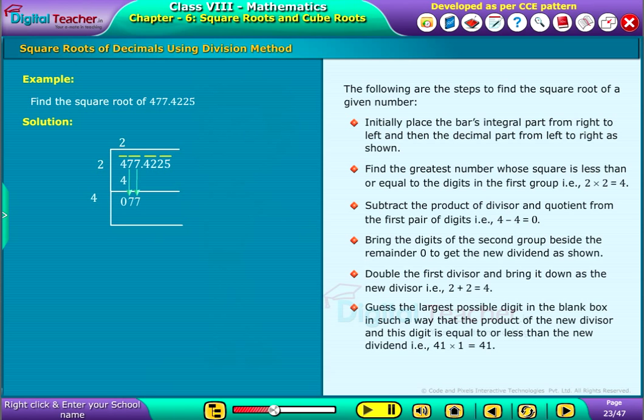Guess the largest possible digit in the blank box in such a way that the product of the new divisor and this digit is equal to or less than the new dividend. That is, 41 into 1 is equal to 41. By subtracting, we get the remainder as 36 and then bring the third group of numbers down.